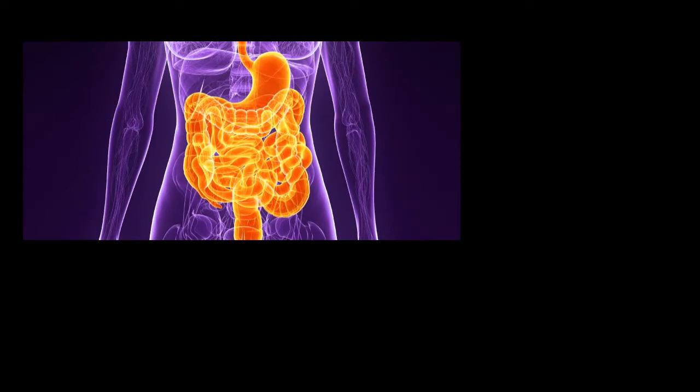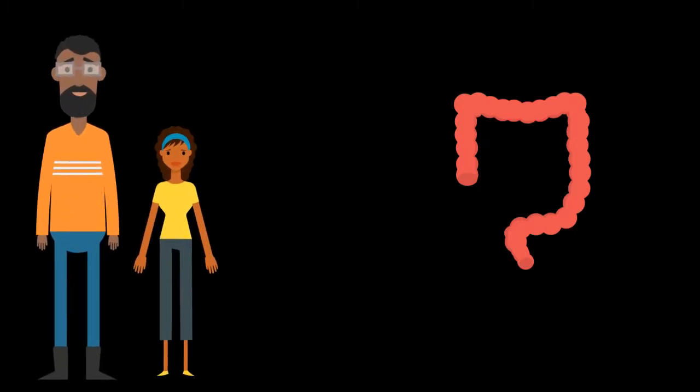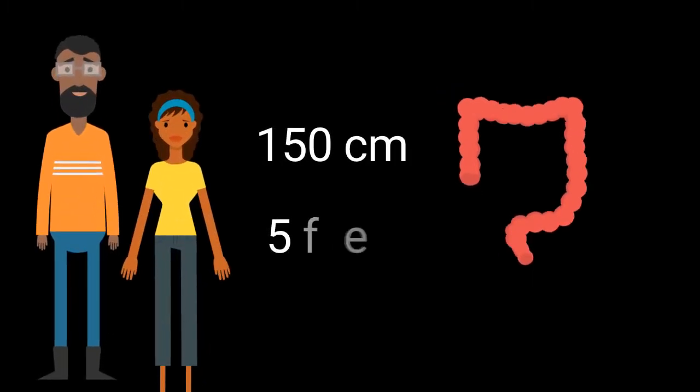The colon is also known as the large intestines or large bowels and is placed in the abdomen. Now, let's look at the colon itself. The length depends on the gender and the height. It measures about 150 centimeters or 5 feet.